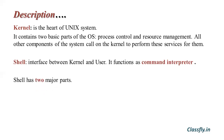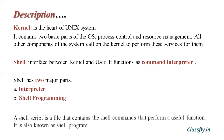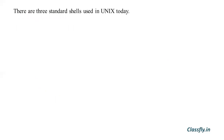The shell has two major parts: the interpreter and shell programming. The interpreter reads your commands and works with the kernel to execute them. Shell programming is a programming capability that allows you to write shell scripts. A shell script is a file that contains shell commands that perform a useful function. A shell script is also known as a shell program.